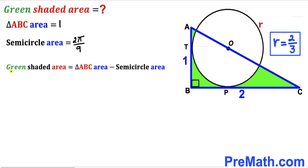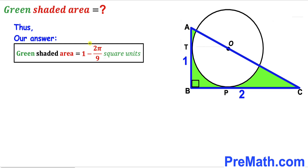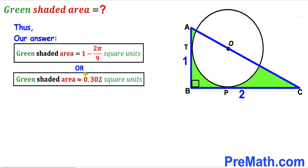Here's our final step. The area of the green shaded region equals the area of triangle ABC minus the area of the semicircle. We found the triangle area as one and the semicircle area as 2π/9. So the green shaded area equals one minus two π divided by nine square units, which is approximately equal to 0.302 square units. That's our final answer.